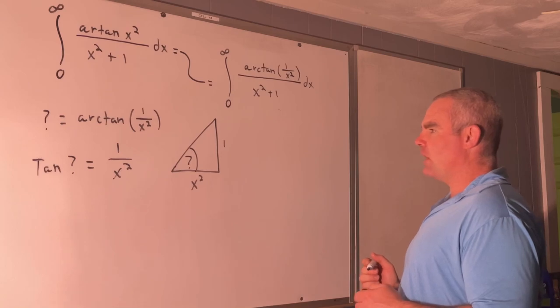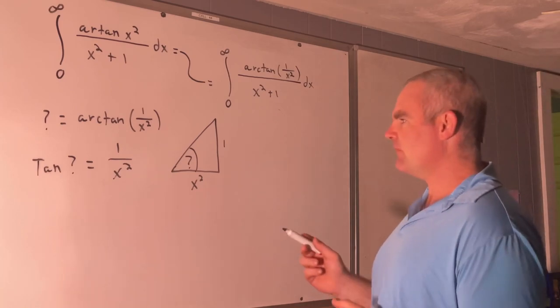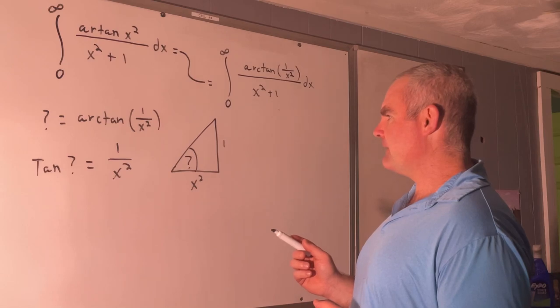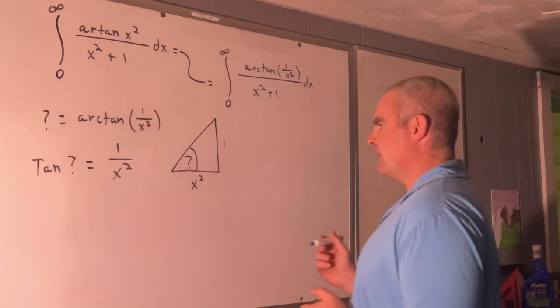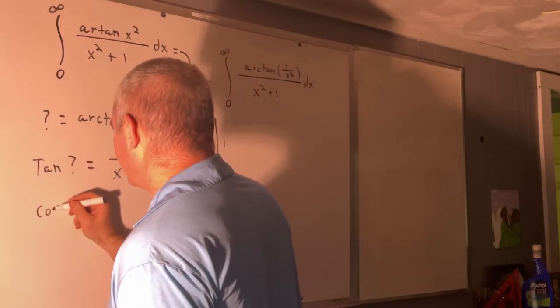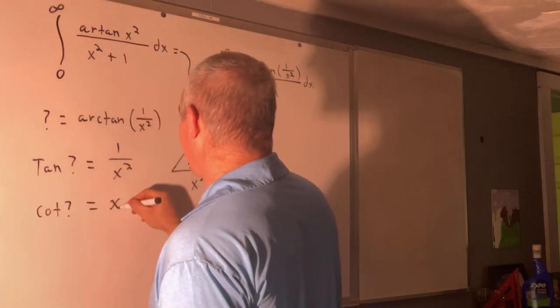Alright. So, great. So what does this mean? Well, this means that cotangent question mark is equal to x squared.